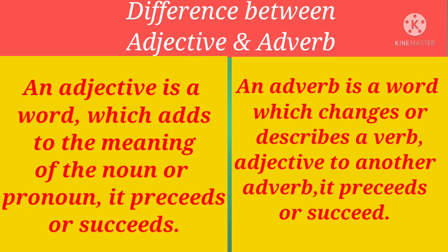An adjective is a word which adds to the meaning of the noun or pronoun it precedes or succeeds. Adjective जो है वो वर्ड होते हैं which adds to the meaning of the noun — जो noun और pronoun के meaning में विशेशता add कर देते हैं। इन words को हम noun या pronoun से पहले भी लगा सकते हैं और बाद में भी, जो हम example की help से सीखेंगे।